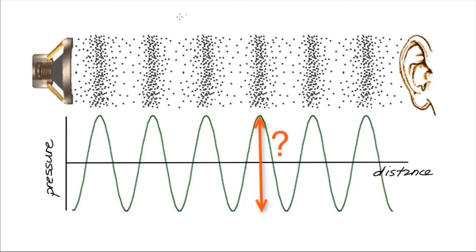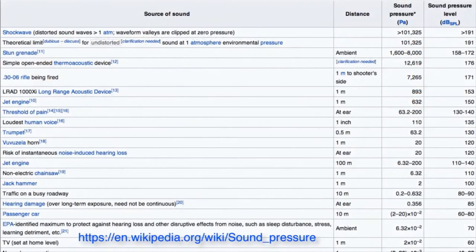How big is this pressure difference? Very small. Here's a chart of the pressure variation for various sounds, including a jet engine and a trumpet. For a loud human voice, the pressure difference is about 110 Pa.